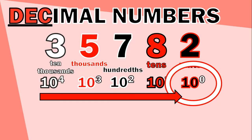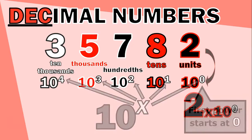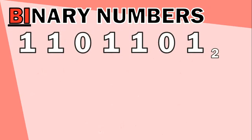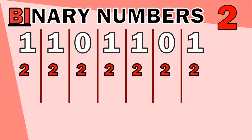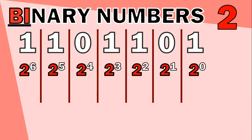Think of a decimal number system as: each column is the base number — in this case 10 — raised to an increasing power, always starting at zero. We multiply each digit by its column value and add them together to get the decimal number. Now let's apply the same logic to a binary number like 1101101. Each column is represented by 2 — the binary system's value — raised to an increasing power, starting at zero: so 2⁰ is 1, 2¹ is 2, 2² is 4, 2³ is 8.